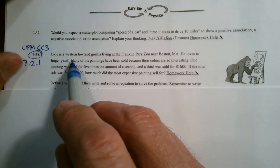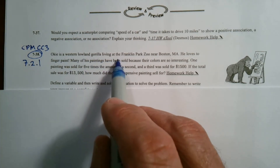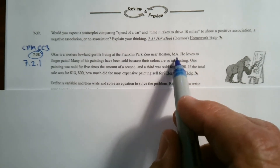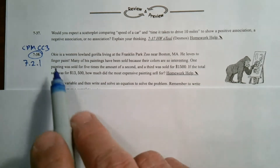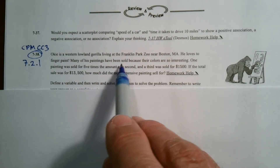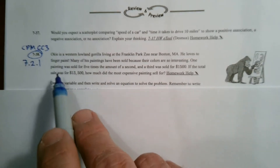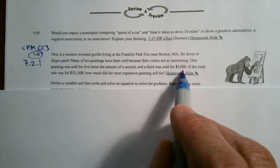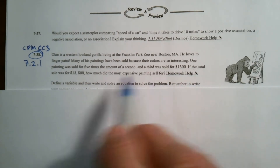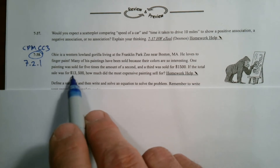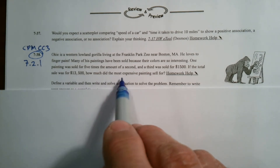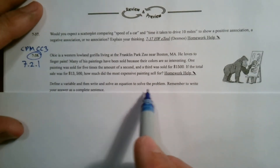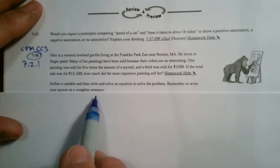The problem says: Oki is a western lowland gorilla living at the Franklin Park Zoo near Boston, Massachusetts. He loves to fingerprint, and many of his paintings have been sold because their colors are so interesting. One painting was sold for five times the amount of the second. The third was sold for $1,500. If the total sale was for $13,500, how much did the most expensive painting sell for? We need to define a variable, then write and solve an equation. Remember to answer in complete sentences.